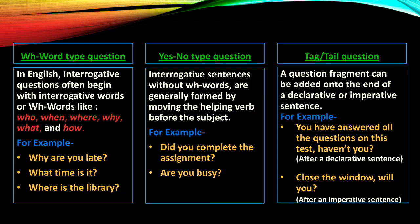Next, tag or tail question. A question fragment can be added on to the end of a declarative or imperative sentence. For example, 'You have answered all the questions on this test, haven't you?' — after a declarative sentence, there is a tag question. Another example: 'Close the window, will you?' — here the tag question is after an imperative sentence.